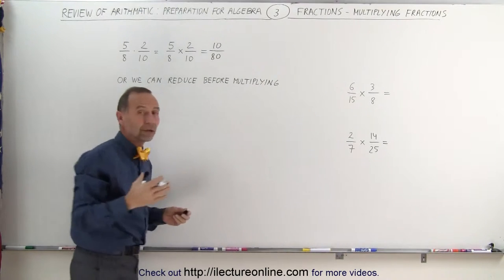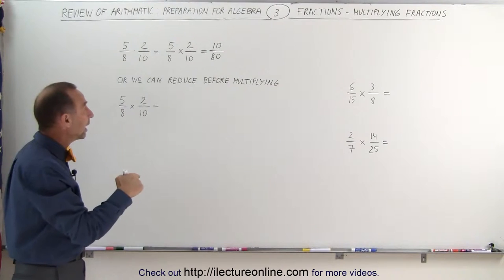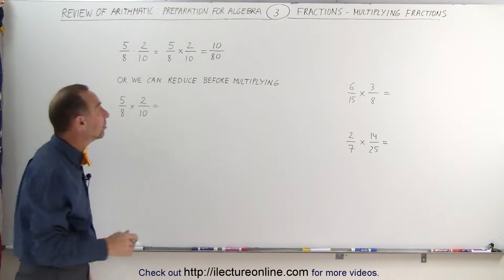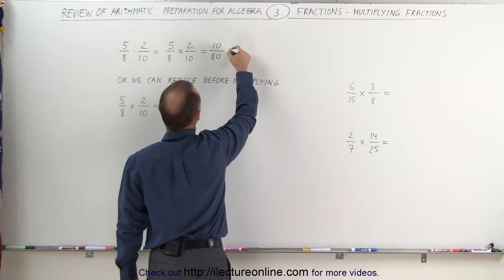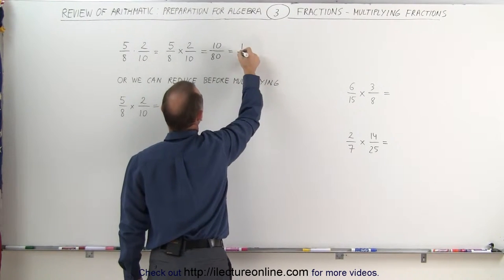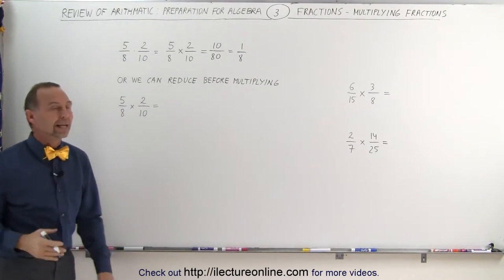And then we can try to reduce the fraction if it's reducible. In this case it is. You notice that both the numerator and the denominator can be divided by 10. That's because they both end in a 0. Divide the numerator by 10, that is equal to 1. Divide the denominator by 10, that's equal to 8. And ultimately the result of 5 eighths times 2 tenths is 1 eighth.